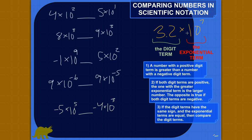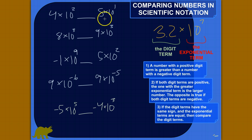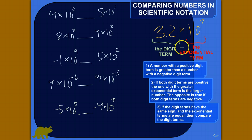Rule number one: a number with a positive digit term is greater than a number with a negative digit term, no matter what. So if you've got a positive digit term and a negative digit term, you can figure out which one's greater just with that — done, you don't have to think about it any further.